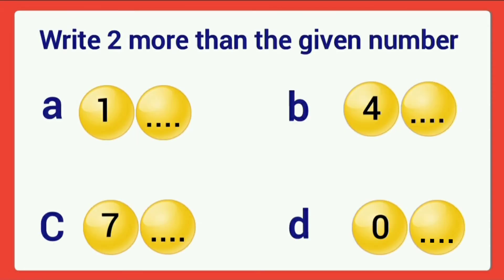Next worksheet: write two more than the given number. First question, the number is one. Count two forward from one. Two more than one is three. Next B, number is four. Two more than four is six.